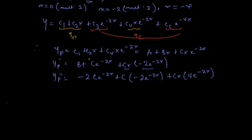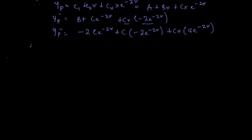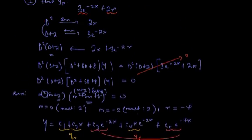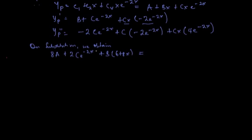When we substitute yp and its derivatives back into the original differential equation, after the algebra we obtain: 8a + 2ce^(-2x) + (6b + 8x)... more precisely we get 8a + 2ce^(-2x) + b(6) + 8bx. This equals the right-hand side: 3e^(-2x) + 2x.